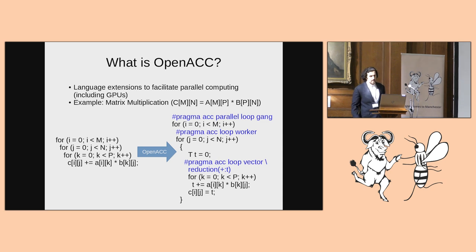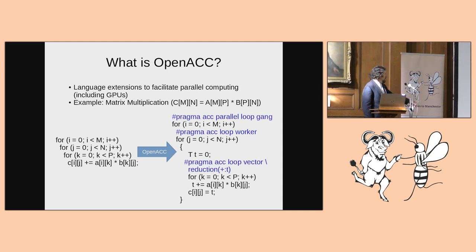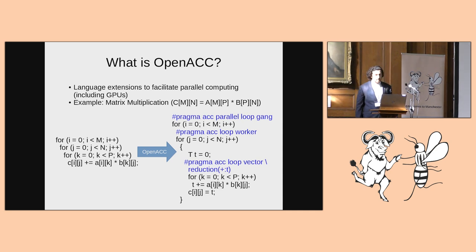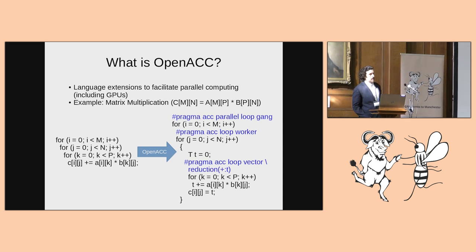OpenACC offers three levels of parallelism: gangs, workers, and vectors. If you're coming from a CPU world, you can think of gangs like a Linux process, workers like pthreads, and vectors like SIMD units. One thing to note is the reduction variable — the OpenACC version introduces a new reduction variable T rather than reducing on C[i][j] directly. This is a quirk in the spec: you can't have array elements inside the reduction variable, so you need a temporary.